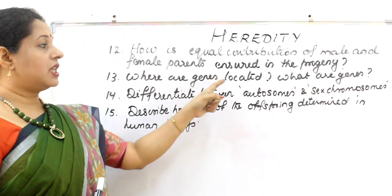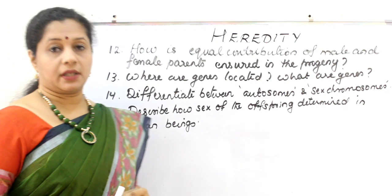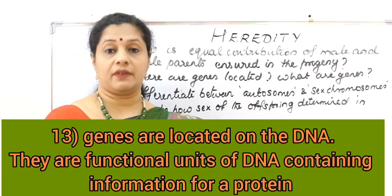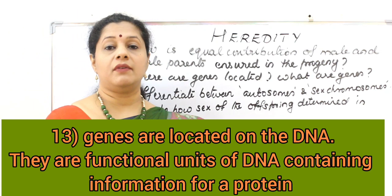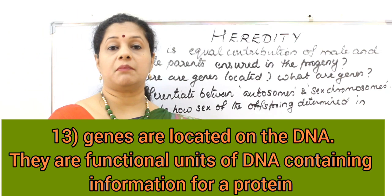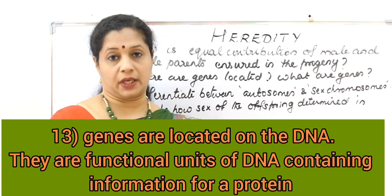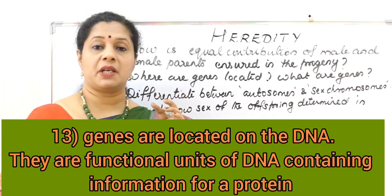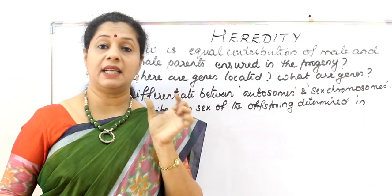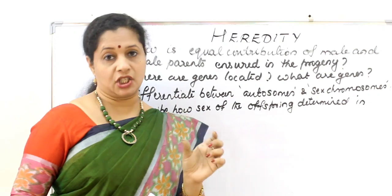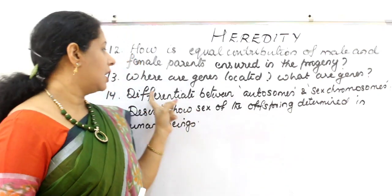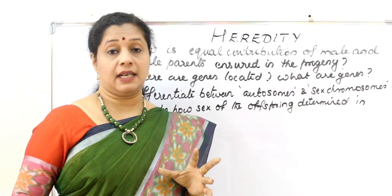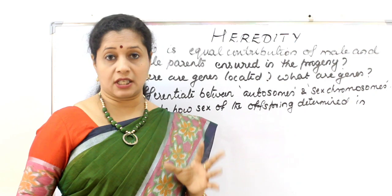Where are genes located? What are genes? Genes are the functional units of DNA which code for a particular protein. DNA is a part of the chromosome, and that is where genes are located.